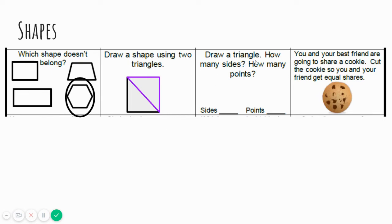Draw a triangle. How many sides and how many points or corners does it have? I'm going to draw a triangle. Let's count the sides. One, two, three. Three sides. Let's count the corners or the points. One, two, three. Three points. Awesome.